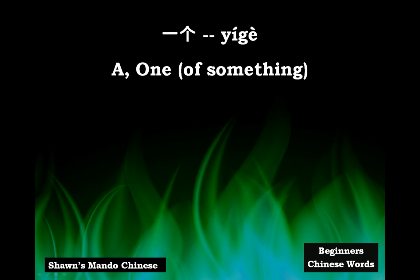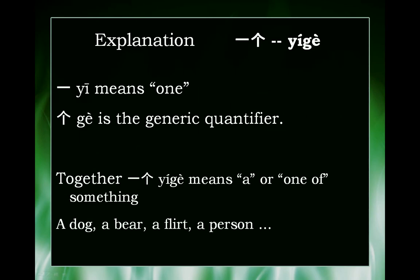Hi everyone, this is Sean's Mando Chinese. This brief video is about the word 一个, which means 'a' or 'one of something.' So here's a brief explanation.